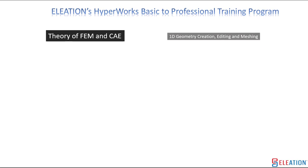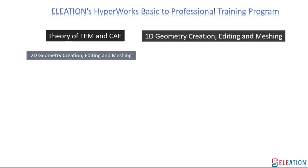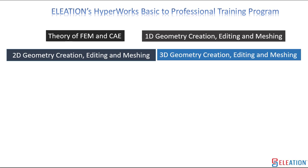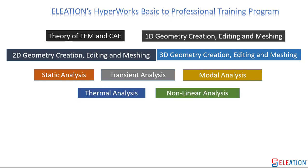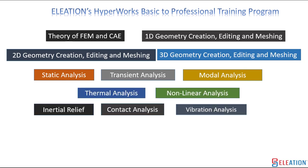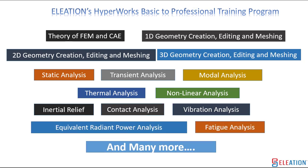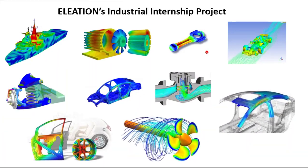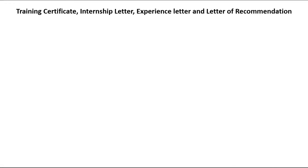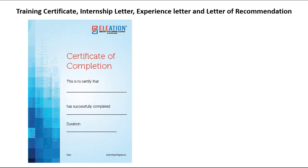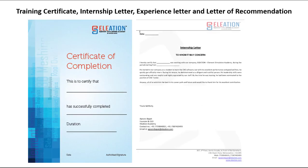Eleation's Hyperworks Basic to Professional Training Program includes: theory of FEM and CAE, 1D, 2D, and 3D geometry creation, editing and meshing, static, transient, modal, thermal, non-linear analysis, inertia relief, contact, vibration, ERP analysis, fatigue analysis, and many more. All students will get industrial internship projects on every analysis, as well as a training certificate, internship letter, letter of recommendation, and experience letter to strengthen their resume.